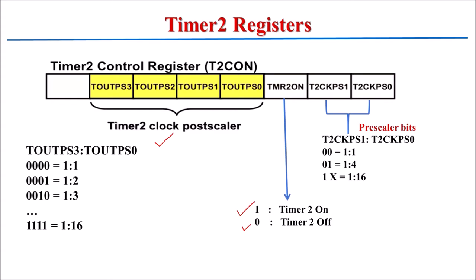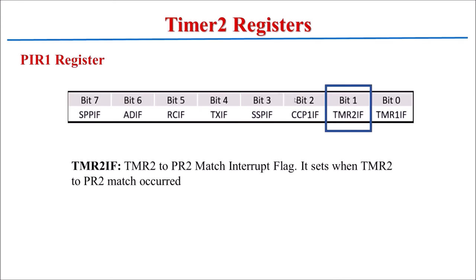This is the control register, and we have to initialize it as per our need. The second register for Timer 2 is the PIR1 register — Peripheral Interrupt Register 1. In this register, bit 1 is the TMR2IF flag bit. This bit is set to 1 when the TMR2 value matches the PR2 value. The user checks this bit: if it is 1, the timer has completed its operation; if it is 0, the timer is still working.